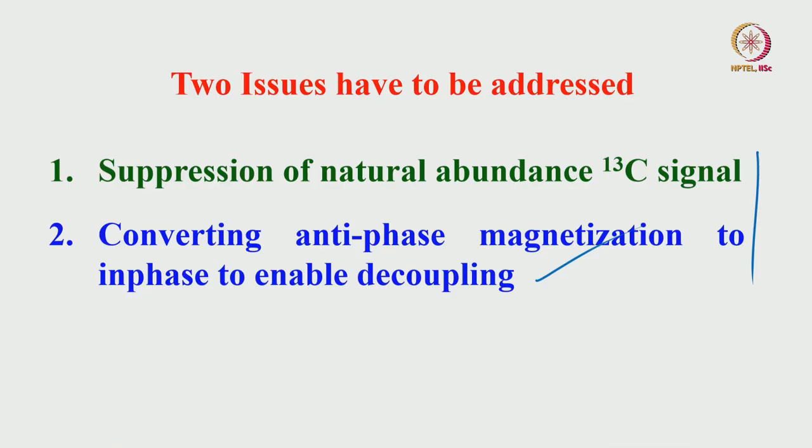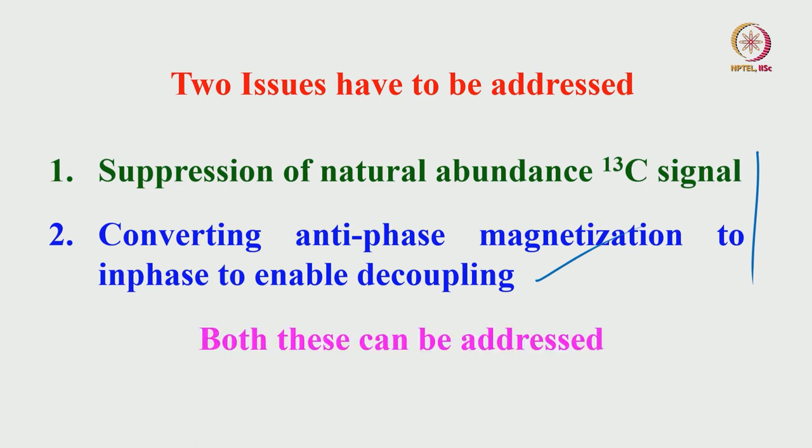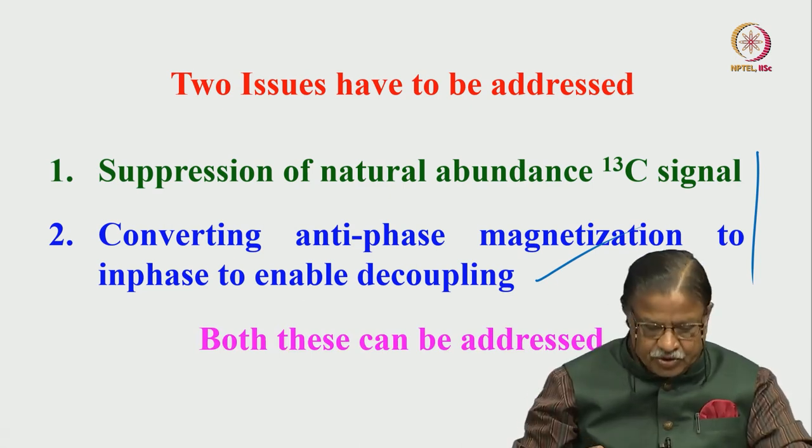There were two points which we need to address: suppression of the natural abundance signal, and converting antiphase to in-phase for decoupling. We already understood how to do this when we were studying decoupling. We can adapt that here. Suppression of natural abundance and converting antiphase to in-phase signal — both can be addressed individually, with no issue at all.